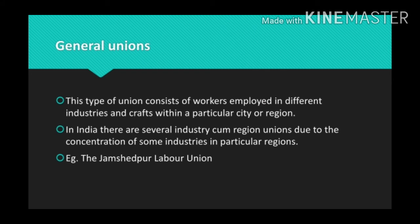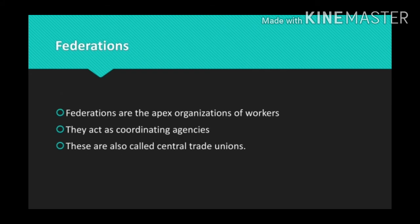The fourth type is the federation. Federations are national-level bodies to which plant-level unions, craft unions, industrial unions, and general unions are affiliated. Federations are the apex organization of workers — that is, the top authority of the workers. 'Apex' means the highest level. They act as a coordinating agency and are also called central trade unions.